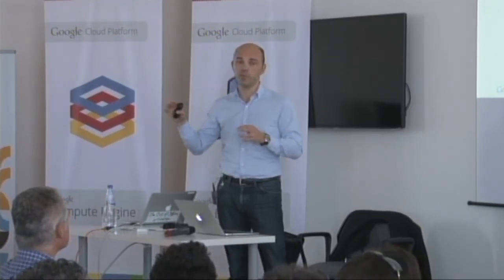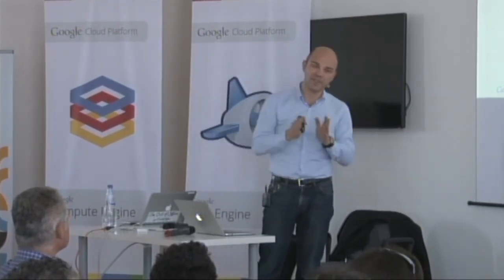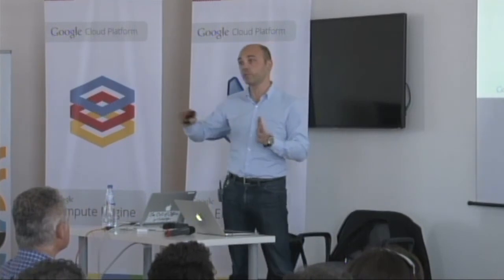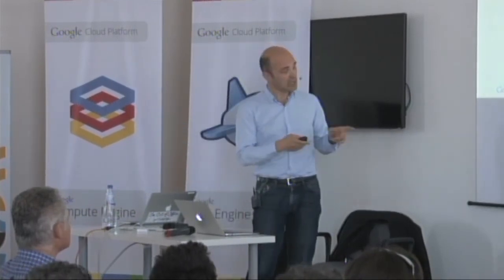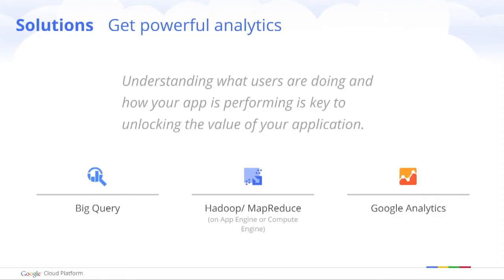For example, at a certain level in a game, should you make things a little bit easier so that players can move forward? To perform analytics, you can use different solutions: first, Google Analytics; we also offer BigQuery, which is a fast query tool; and you can also run Hadoop and MapReduce either on Compute Engine or on App Engine.